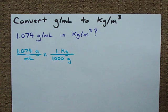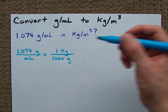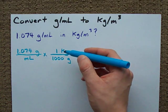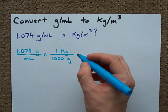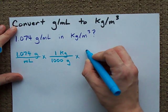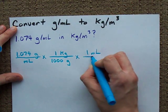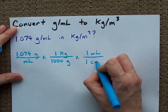Now, how are we going to convert from milliliters to meters cubed? Well, the first thing to know is that one milliliter is one centimeter cubed.